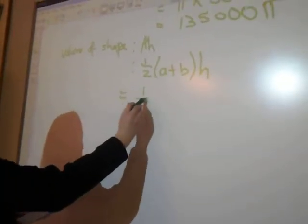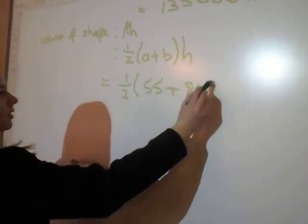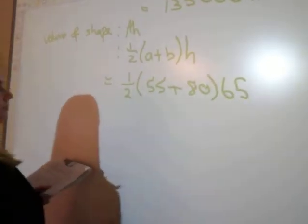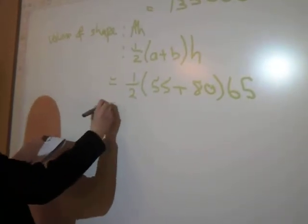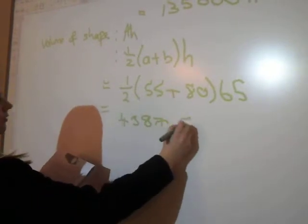And then it's a half, 55 plus 80 times 65. That then gives us an answer of 4,387.5.